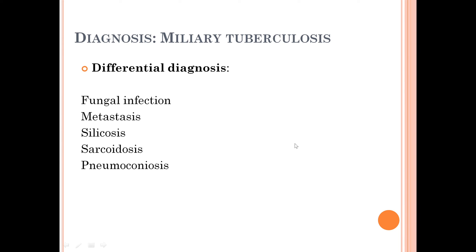These nodules primarily involve the secondary pulmonary lobules. Miliary tuberculosis can present in both primary as well as post-primary forms. They are called miliary because they are the size of millet seeds — millet seeds are normally two to three millimeters in size — and that is how this condition got its name.